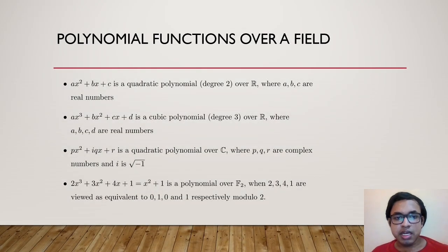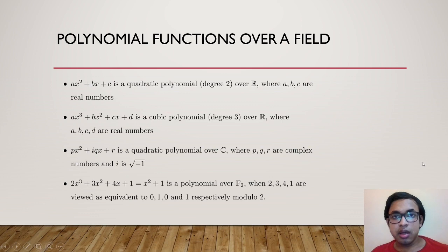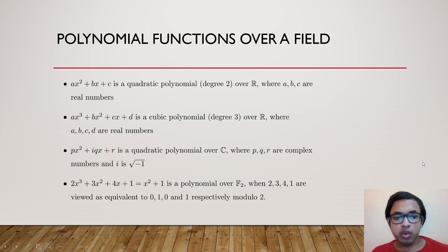Some examples: ax²+bx+c where a≠0 is a polynomial of degree 2 over R with a, b, c real. Then ax³+bx²+cx+d where a≠0 is a cubic polynomial of degree 3 over R. We also have quartic and quintic polynomials of degrees 4 and 5 over R. Over complex numbers, px²+iqx+r where p, q, r are complex numbers is a quadratic polynomial over C, and similarly cubic, quartic, quintic polynomials over C.